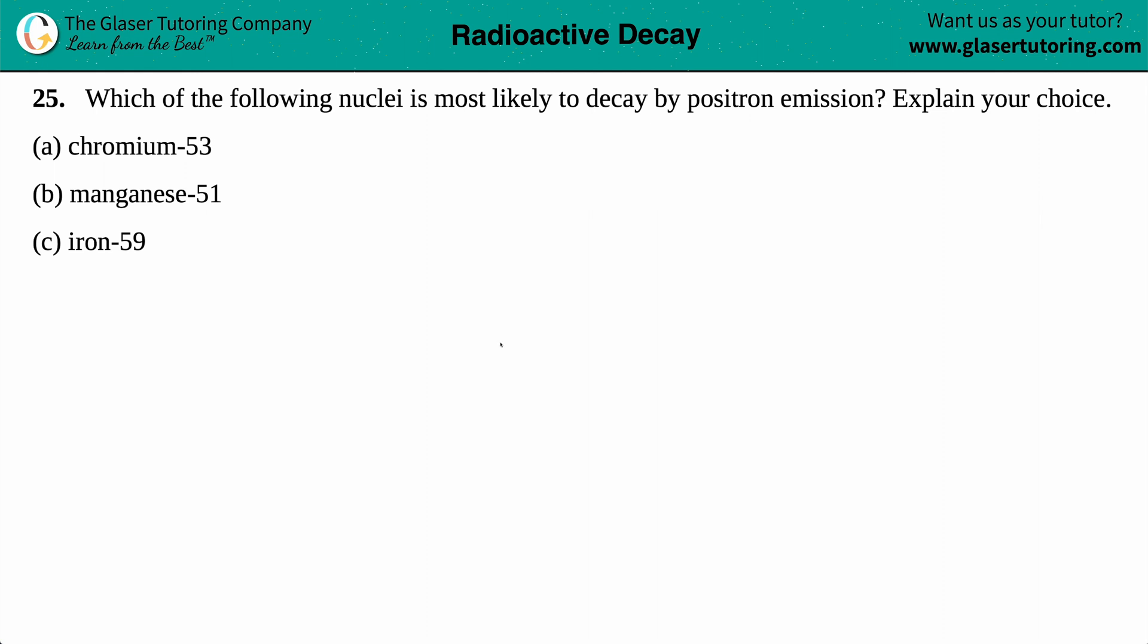Number 25: Which of the following nuclei is most likely to decay by positron emission and then explain your choice. Okay, so we got a bit of a multiple choice going on here with only three choices, so we have a 33.33 percent chance of getting the right answer, and then we just have to explain our answer. My explanation will come with the stuff that I put on the screen for you guys.